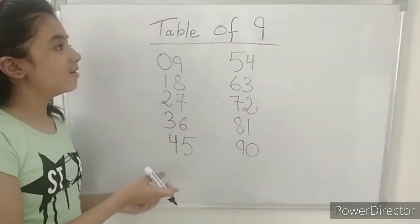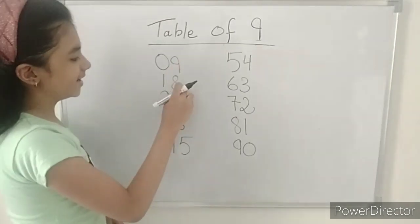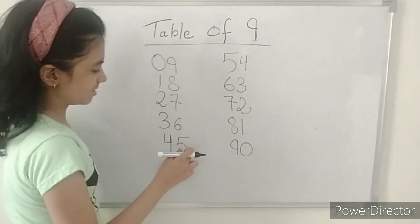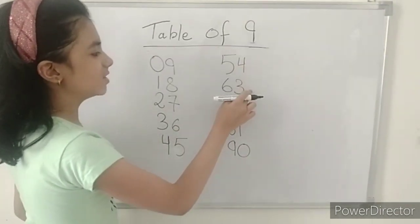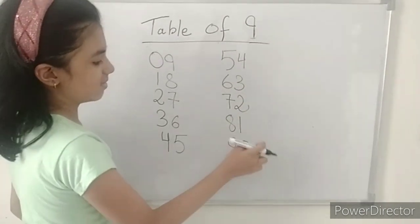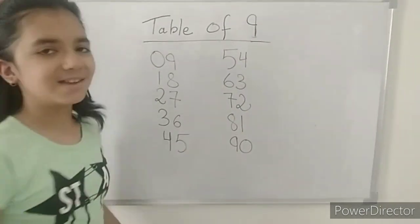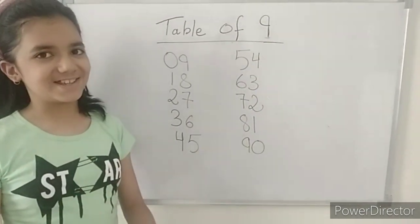This is the table of 9: 9, 18, 27, 36, 45, 54, 63, 72, 81, and 90. This was very easy!